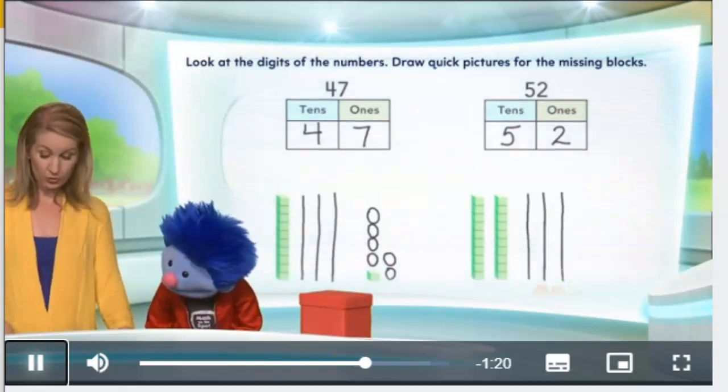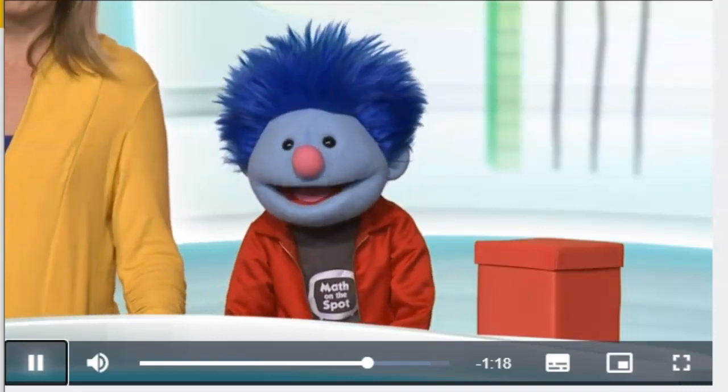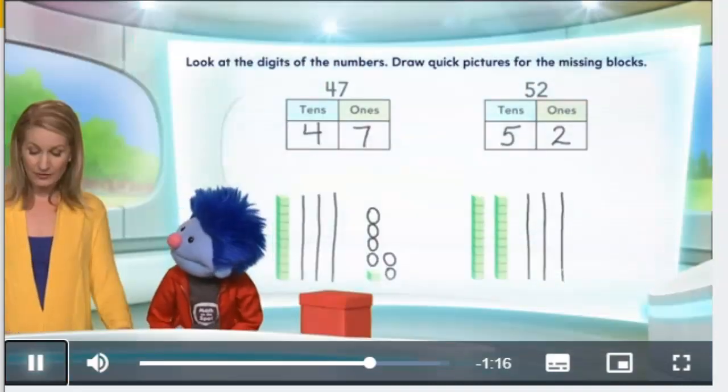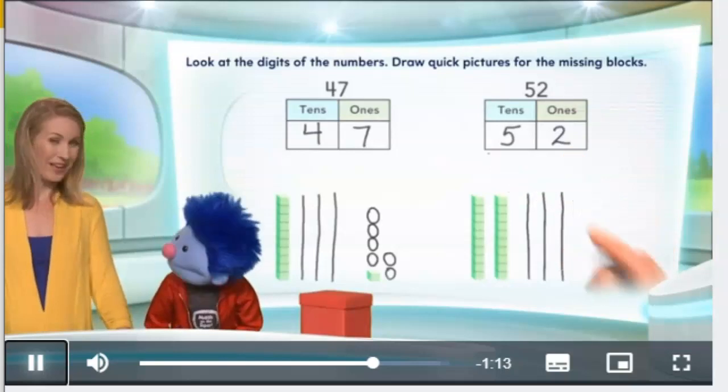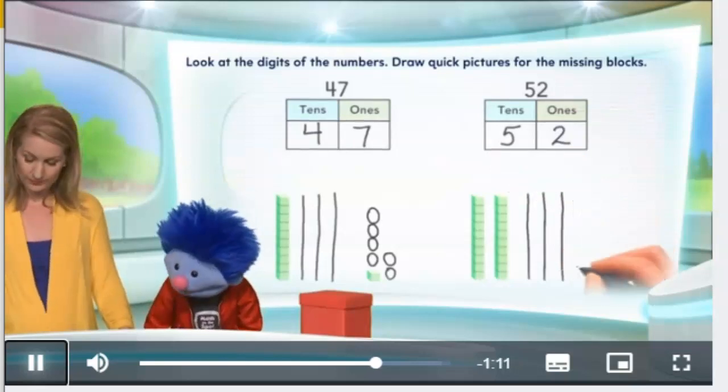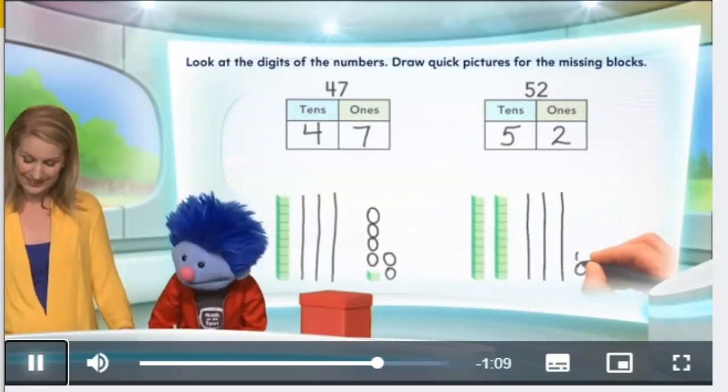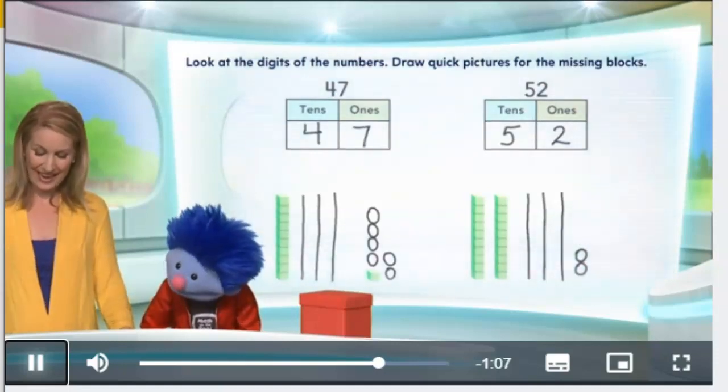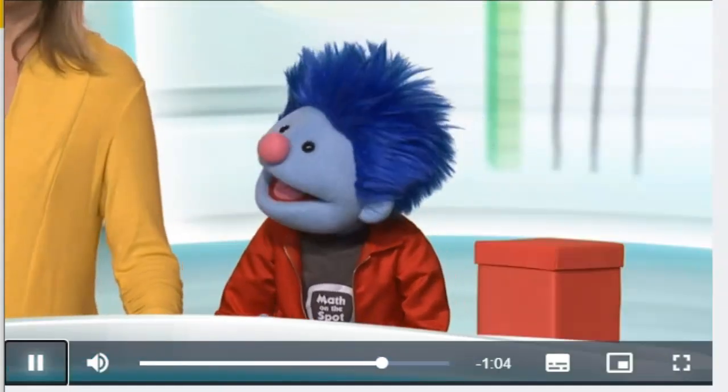So we actually needed to include three more. Three more. That's right. So that's five tens. And now we need to show two ones. So one. One little circle. Two little circles. Exactly right. Well done.